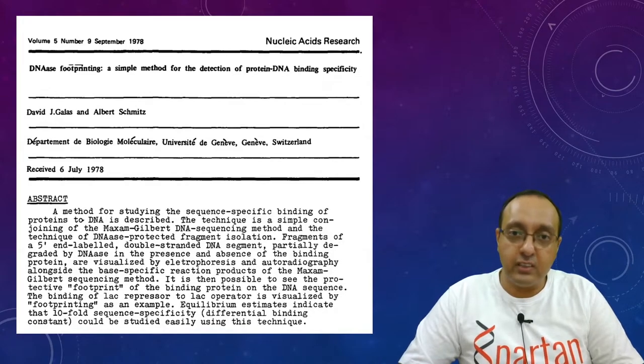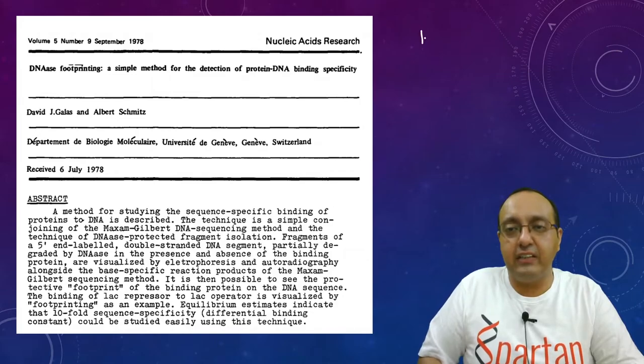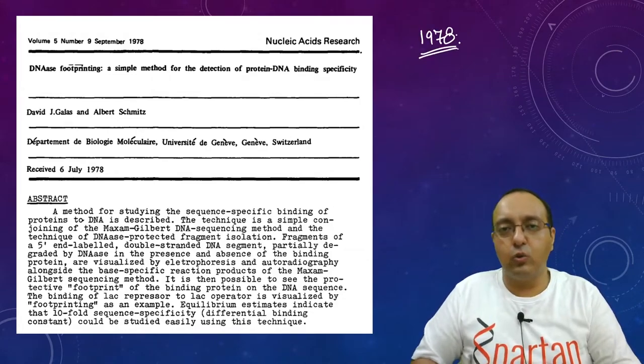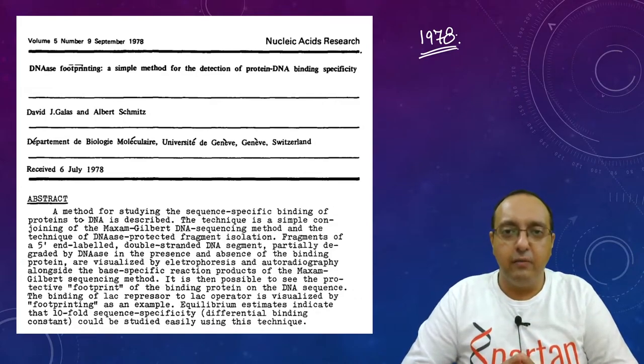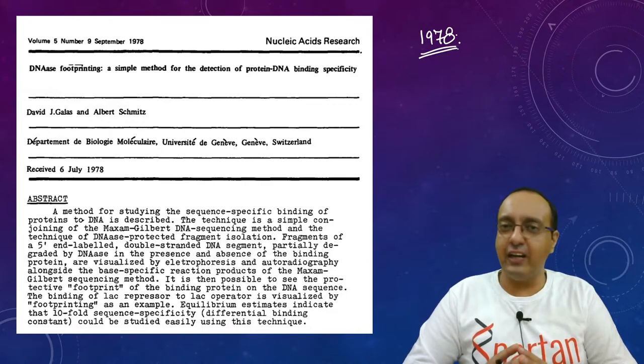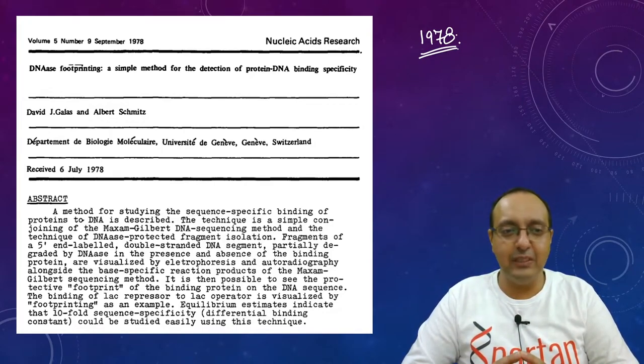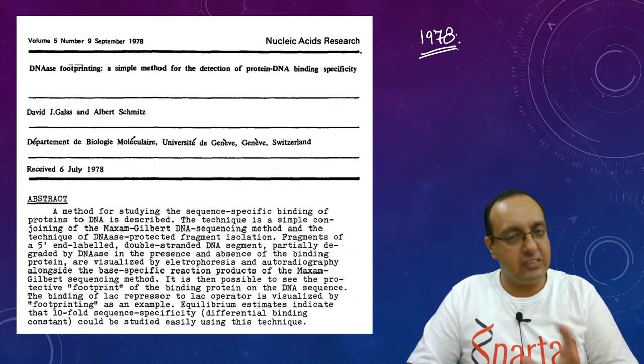The first paper which reported DNase footprinting was published in 1978, right at the cusp of development of recombinant DNA technology and biotechnology. This was very heady times. David Galas and Albert Schmitz in Switzerland developed this technique, and the idea is pretty simple, just like gel shift assay that we just discussed.